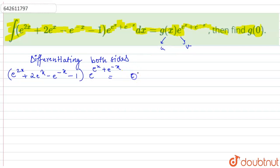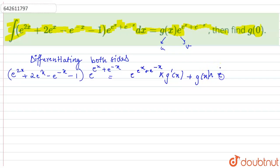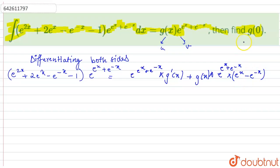Applying the product rule: first, e^(e^x + e^(-x)) remains constant times g'(x), plus g(x) remains constant times the differentiation of e^(e^x + e^(-x)). The differentiation gives e^(e^x + e^(-x)) times (e^x - e^(-x)).